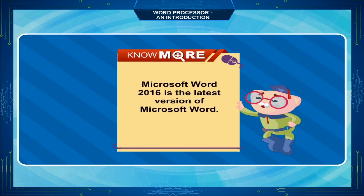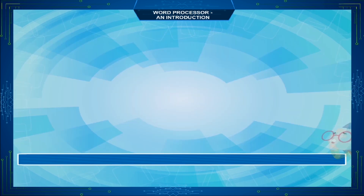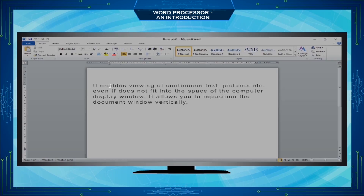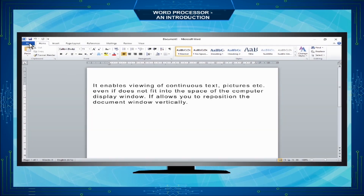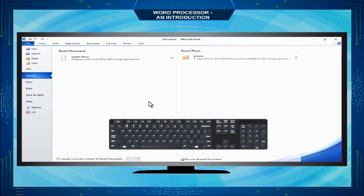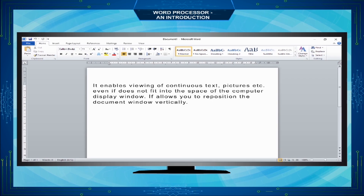Microsoft Word 2016 is the latest version of Microsoft Word. To close a file in MS Word, click the File tab and choose the Exit command, or use the keyboard shortcut Ctrl+W. A file can also be closed by clicking the Close button on the top right corner of the window.